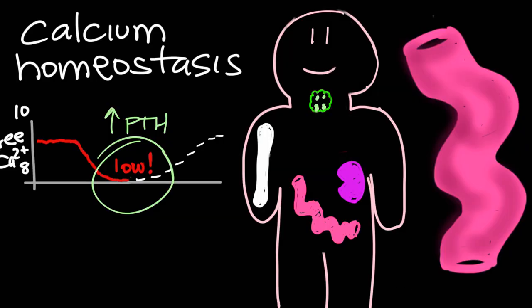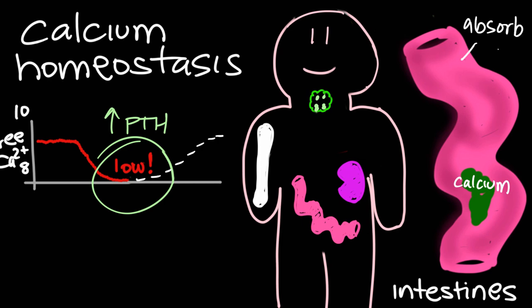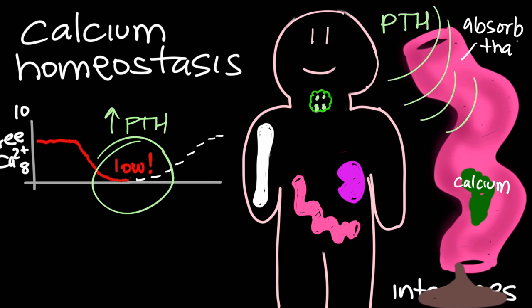Another important target for PTH is going to be the intestines. Since we get a little bit of calcium usually from our digested food, the intestines become an important source for blood calcium. As food is digested inside the intestines, the calcium is released then the calcium has to be absorbed by the intestinal cells. Otherwise it ends up going out of the body in the feces. So PTH signals to those intestinal cells to get the calcium from the digested food and absorb it into the body. This then adds the calcium to the blood stream and helps raise calcium levels in the body.